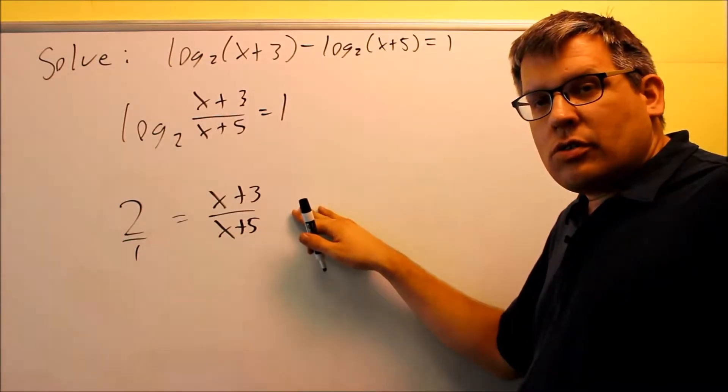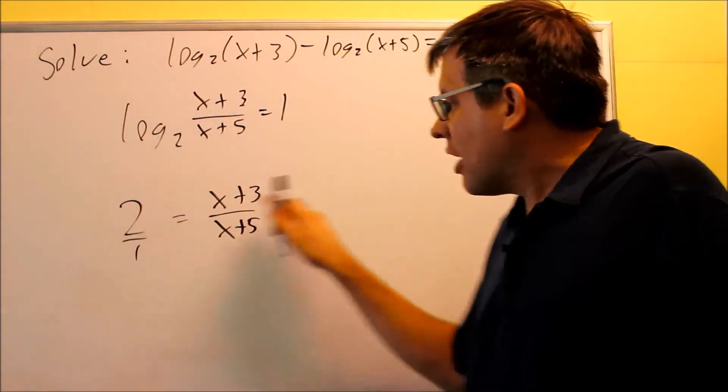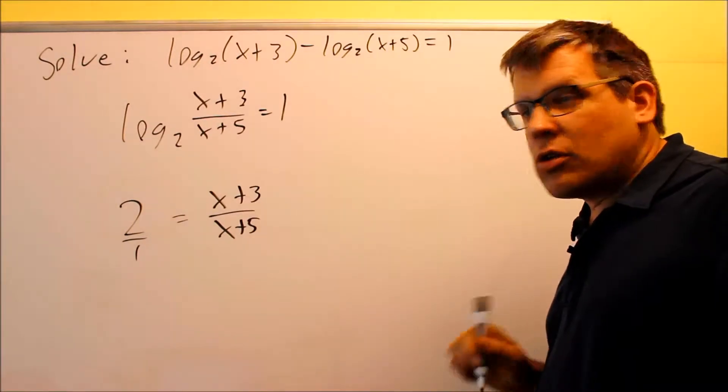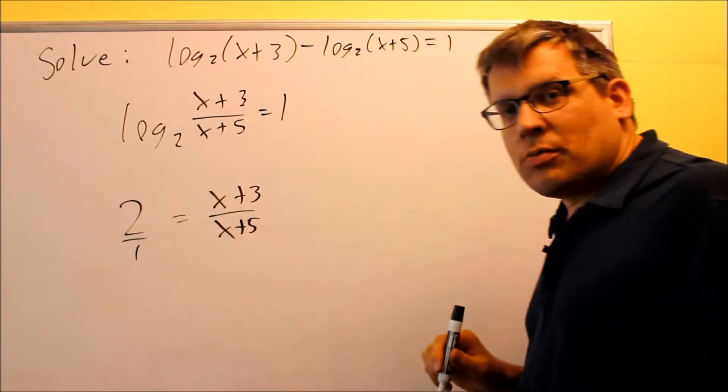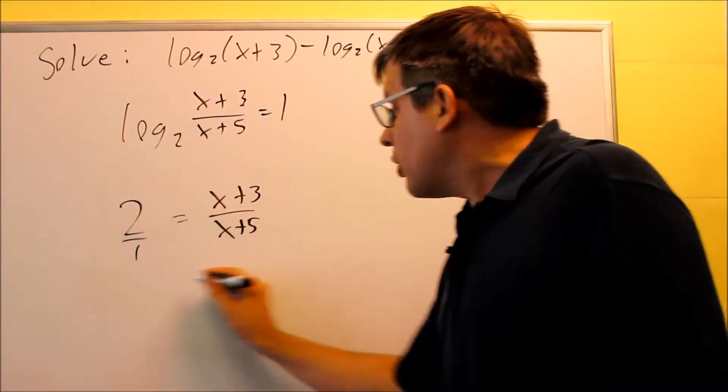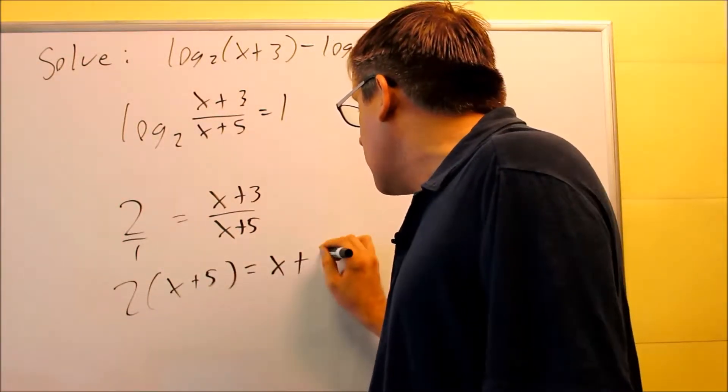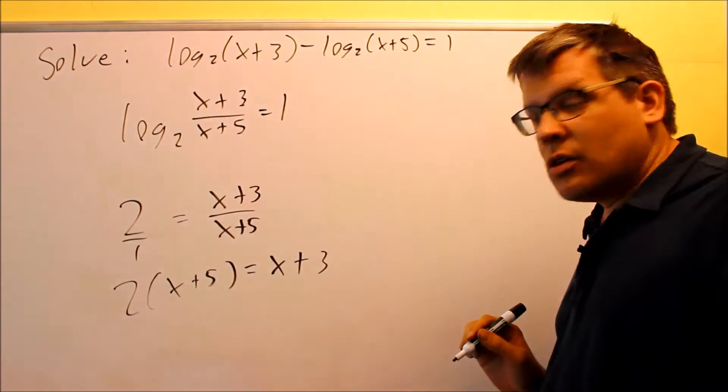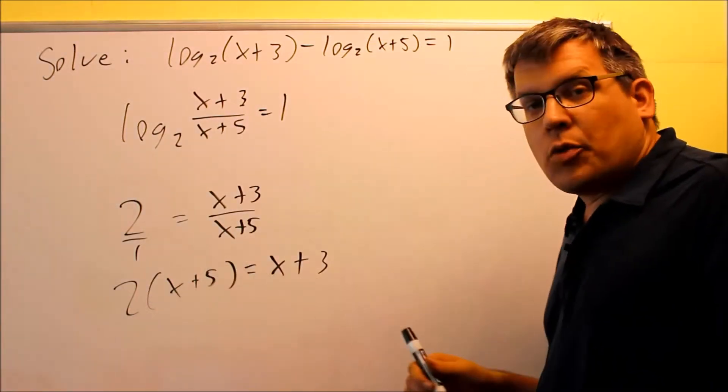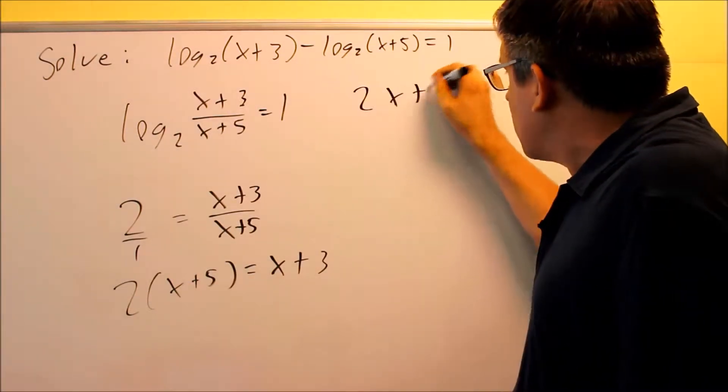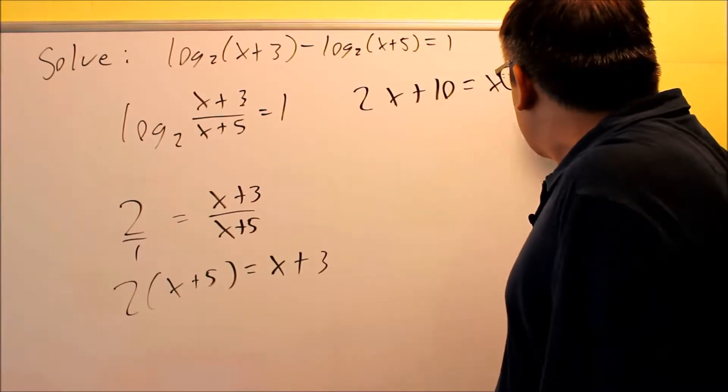When you're at this step, you're going to either multiply both sides by the LCD, by least common denominator, or you can cross multiply. If we cross multiply, we'd have 2 times x plus 5 is going to equal 1 times x plus 3. We're going to multiply this out, and we're going to solve this for x. 2x plus 10 equals x plus 3.